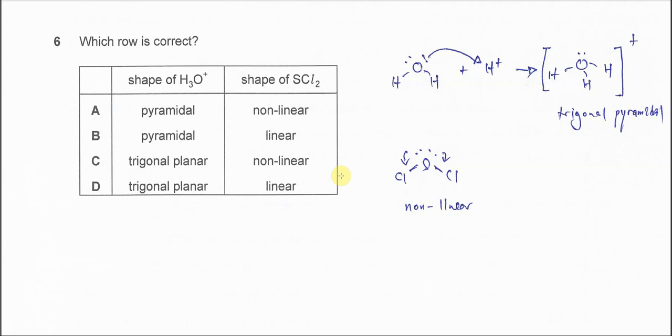Question 6. Which row is correct? In this question we have the shape of H3O positive and the shape of SCl2.